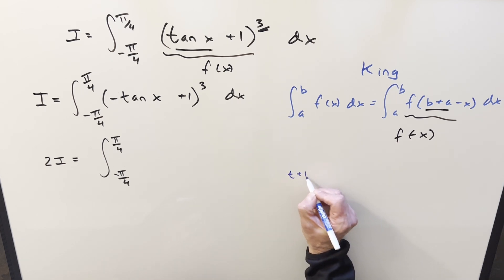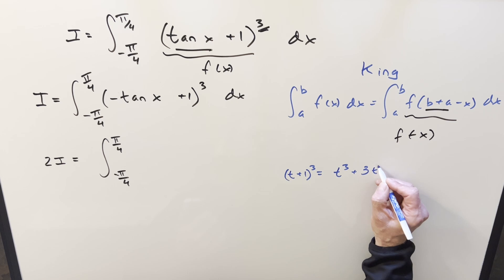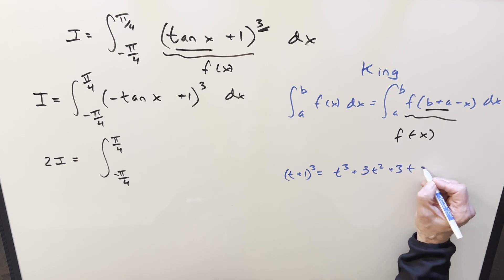So let's just abbreviate tangent as t. So when I expand out t plus 1, when I cube it, we'll just use Pascal's triangle or the formula or whatever. And this is going to be t cubed, 3t squared, plus 3t, plus 1.